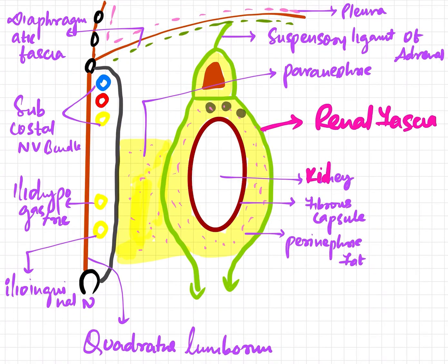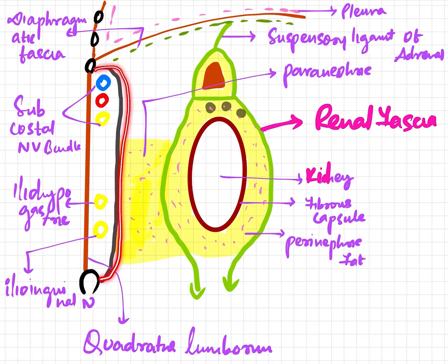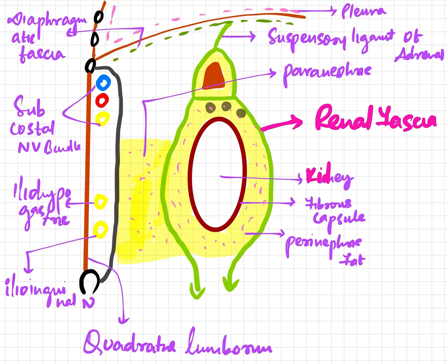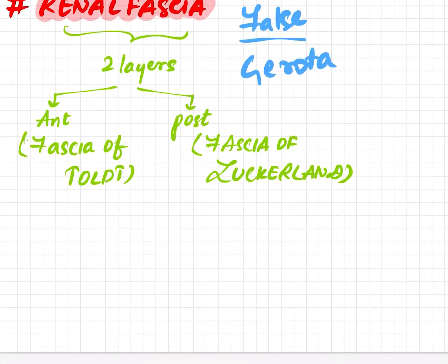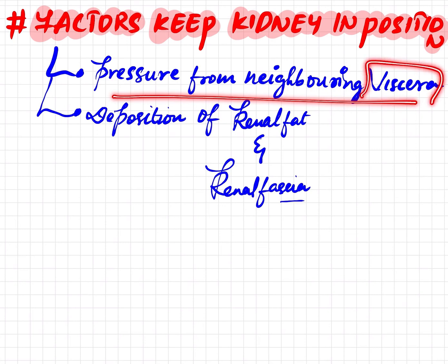Now coming to the paranephric fat. This paranephric fat is a fat tissue present between the anterior layer of the renal fascia and the peritoneum. So it is present only in the anterior aspect.